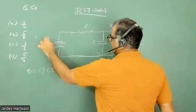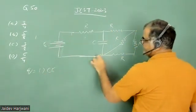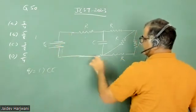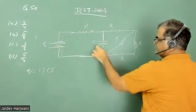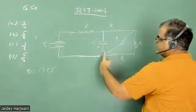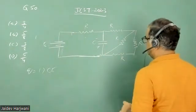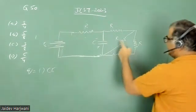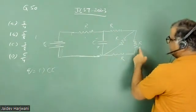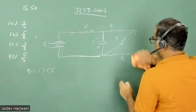So this is my redrawn circuit. Now what will happen? This current will flow from here, and once this capacitor is fully charged, it will not draw any current. So first let me calculate the equivalent resistance. These two resistances are in series, so this is 2R.